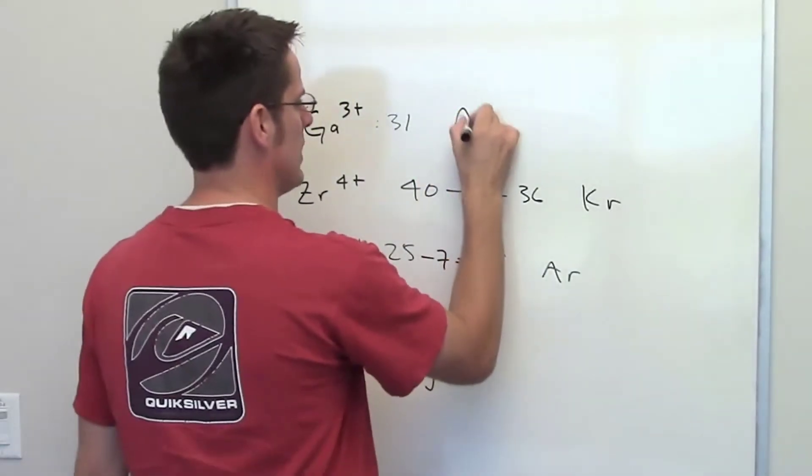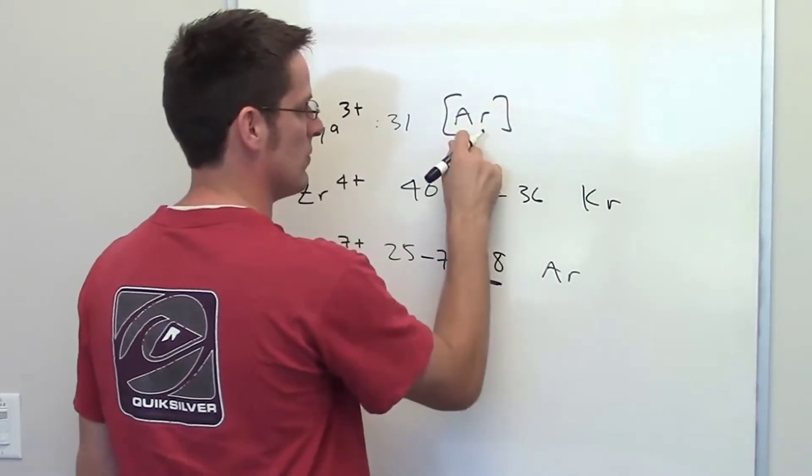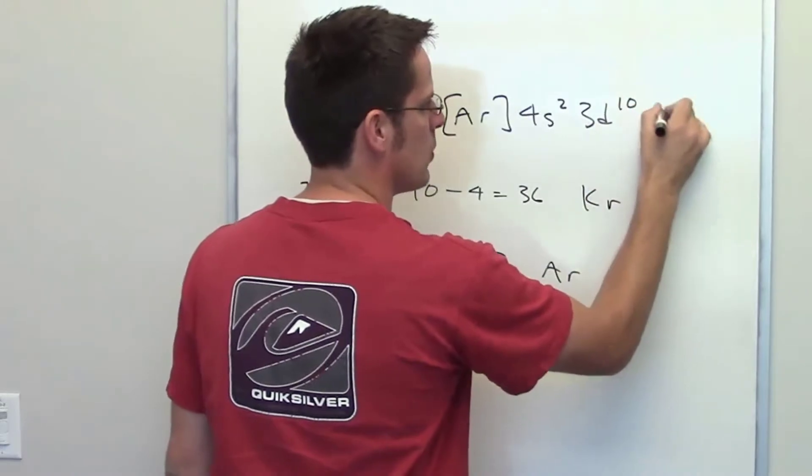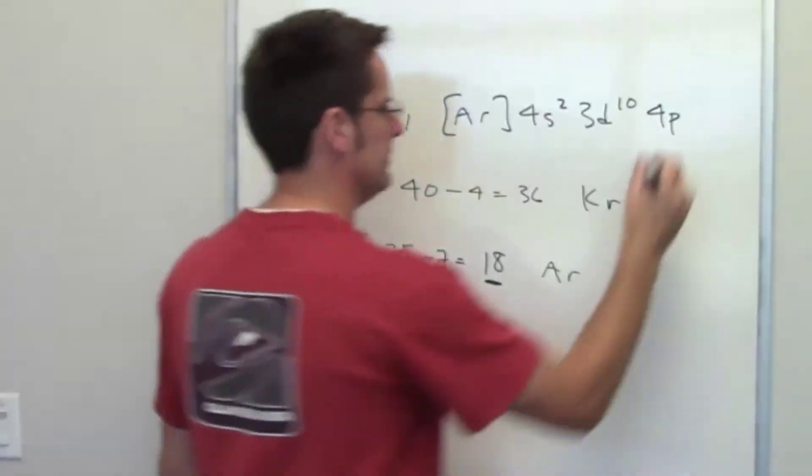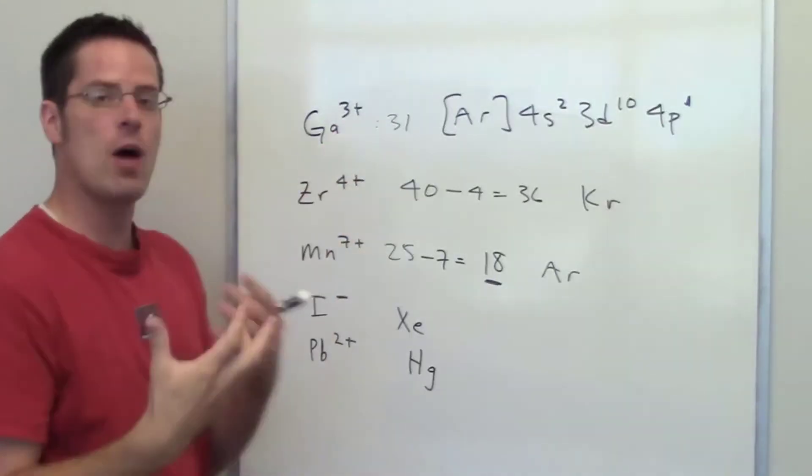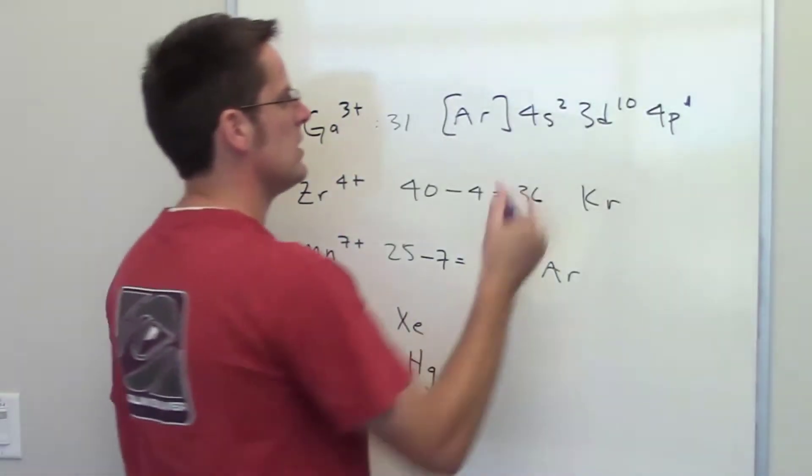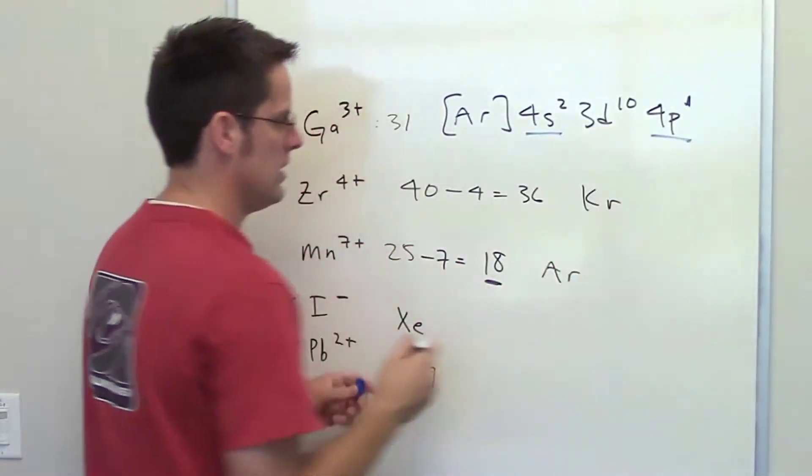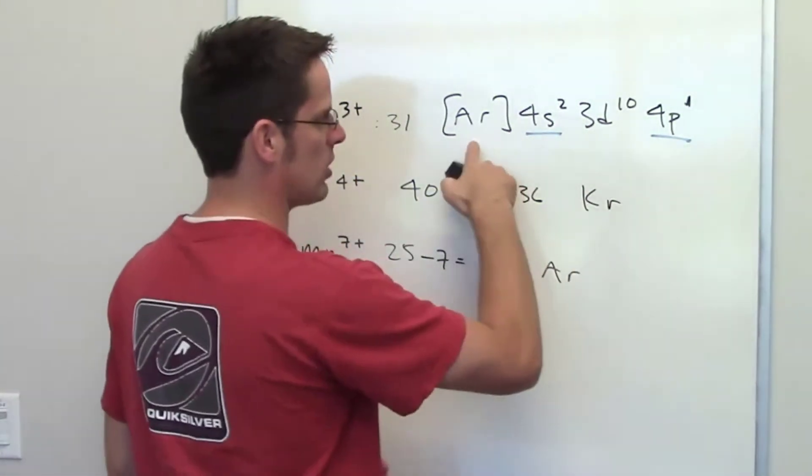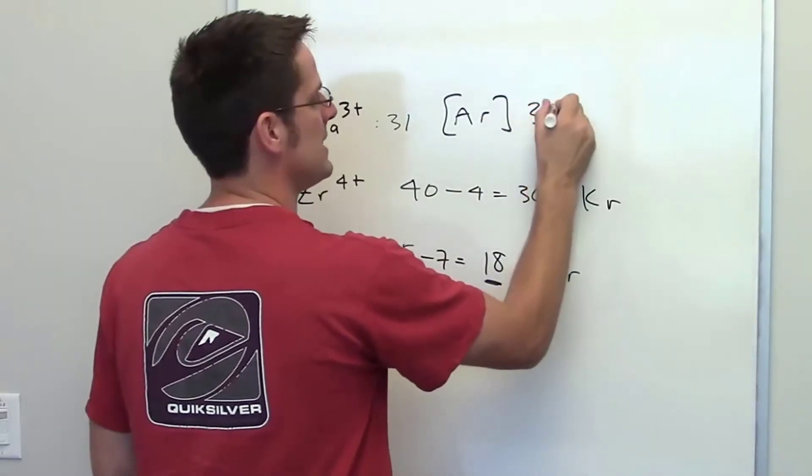it's condensed electron configuration, it has an electron configuration of argon 4s2, 3d10, 4p1. Now gallium is going to lose these three electrons from its outermost shells, these four orbitals. So that means that gallium 3+ has an electron configuration of argon 3d10.